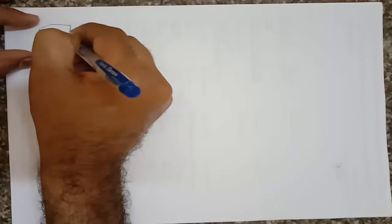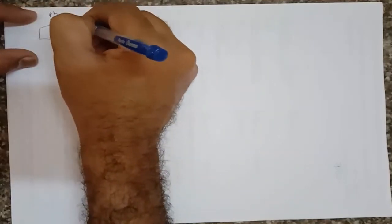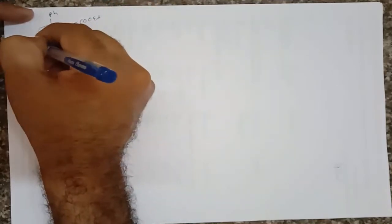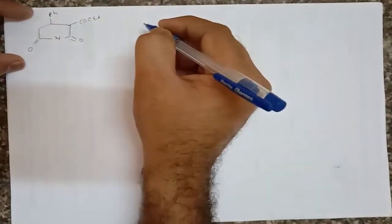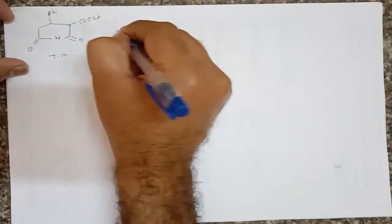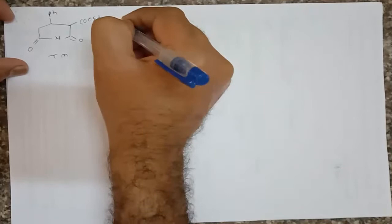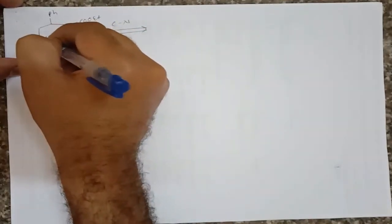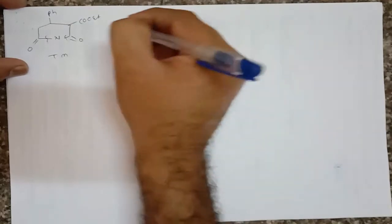Let us take one more example on this heterocyclic compound — that means if it contains a heteroatom and a heterocyclic ring. Here is such a type of heterocyclic compound containing a cyclic amide. So this is the target molecule. We know that this molecule contains an amide functional group, and therefore we can break this C-N bond and this C-N bond — that means two C-N bonds we can break here.